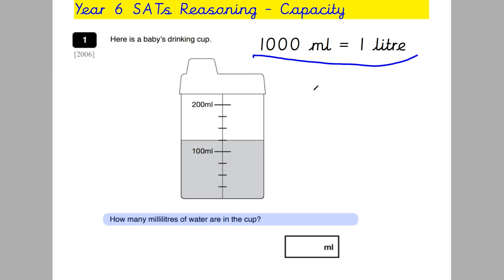The first question I'm going to look at, these are all SATs questions, so having a practice of these will really help you prepare for your reasoning papers. Here is a baby's drinking cup. How many millilitres of water are in the cup? We can see here the water is somewhere in between 100 and 200 millilitres. We don't know what these markings represent, so the first thing is to work out what these increments represent, these gaps.